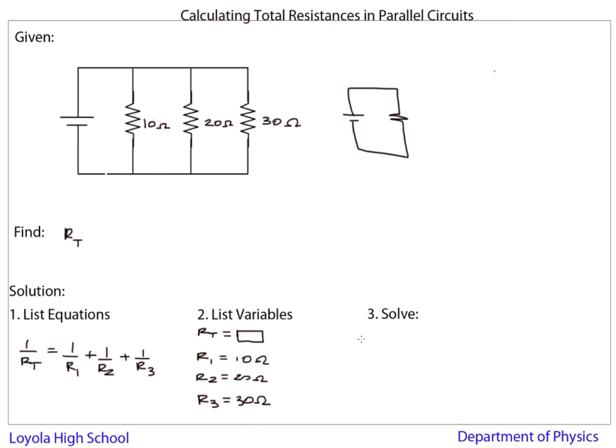So the solution part looks a little like this. It's 1 over RT, the total resistance, is equal to 1 over 10 plus 1 over 20 plus 1 over 30. And so according to my calculations, this is 0.1 plus 0.05 plus 0.033. That's 1 over RT, which if you add that up is 0.1833.